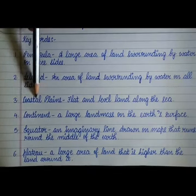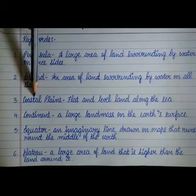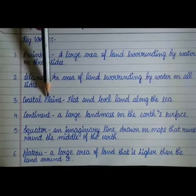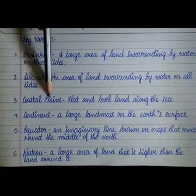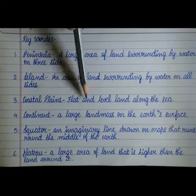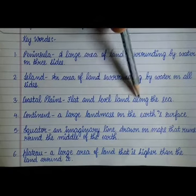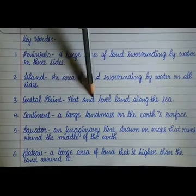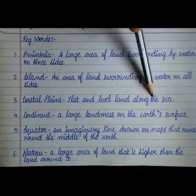Third keyword: Coastal Plains. C-O-A-S-T-A-L Plains, P-L-A-I-N-S. Coastal Plains. Flat and level land along the sea. Flat and level land along the sea.